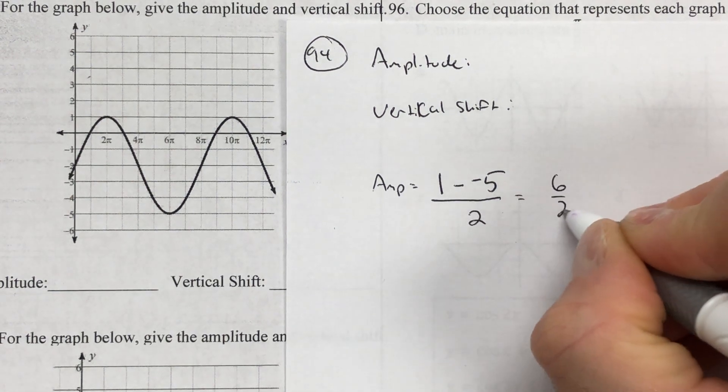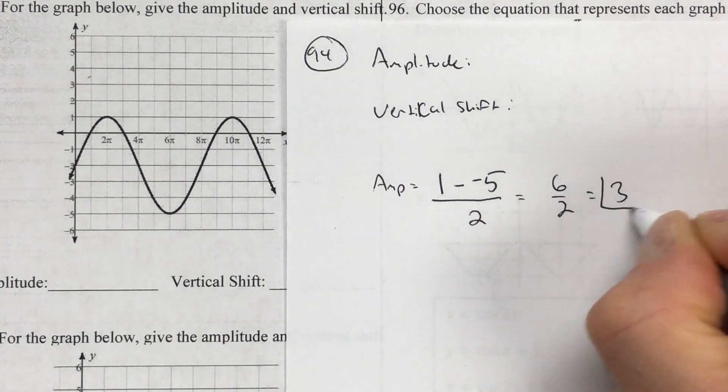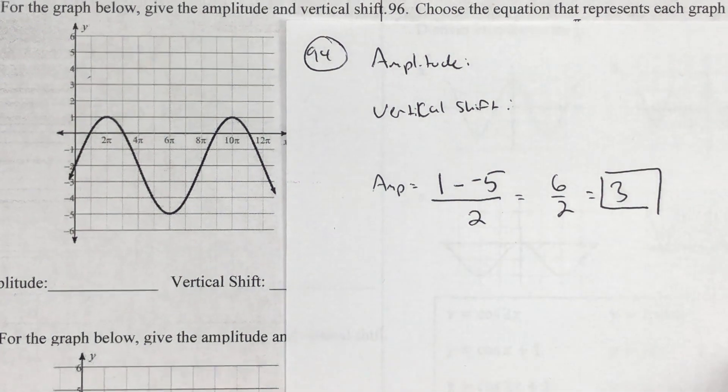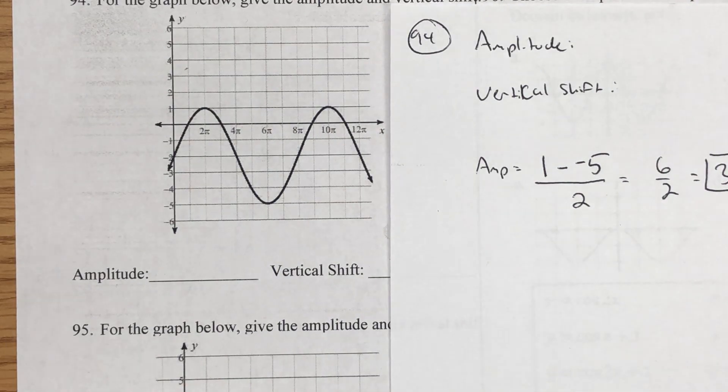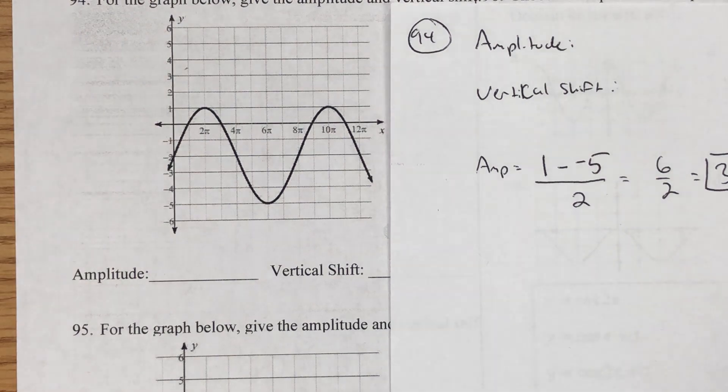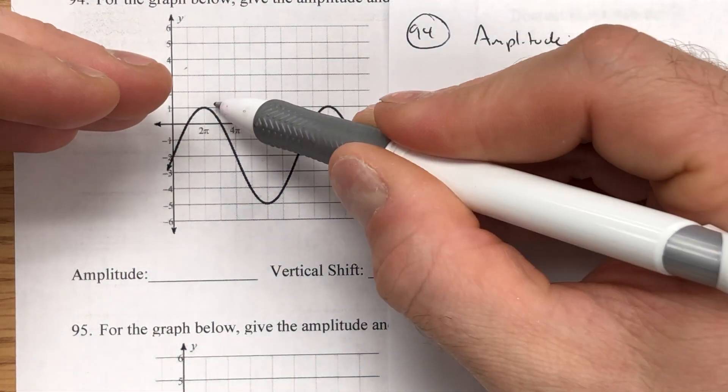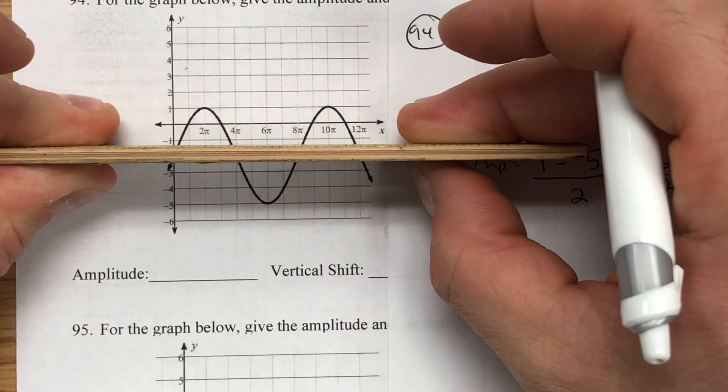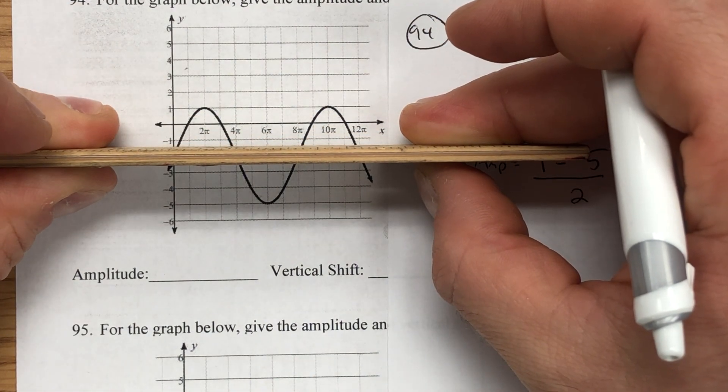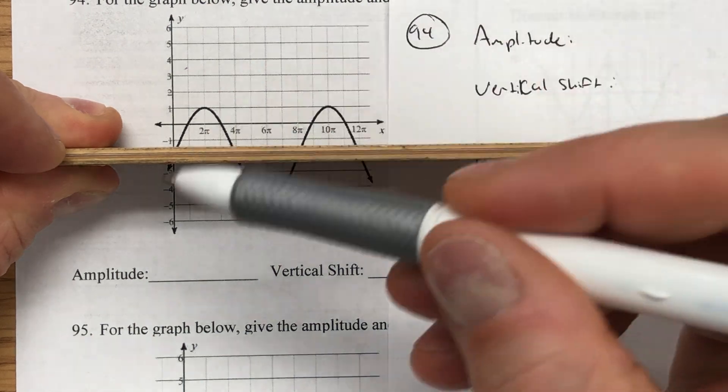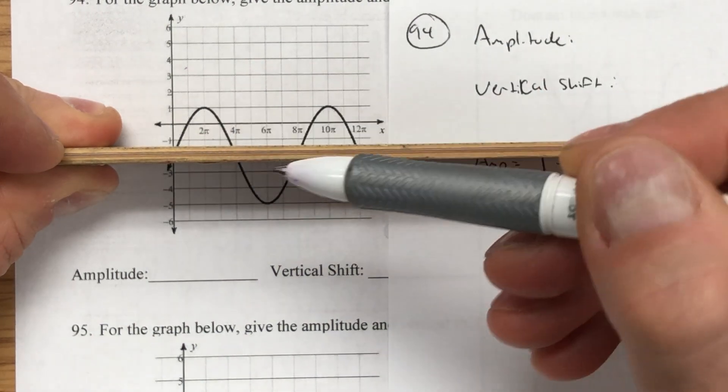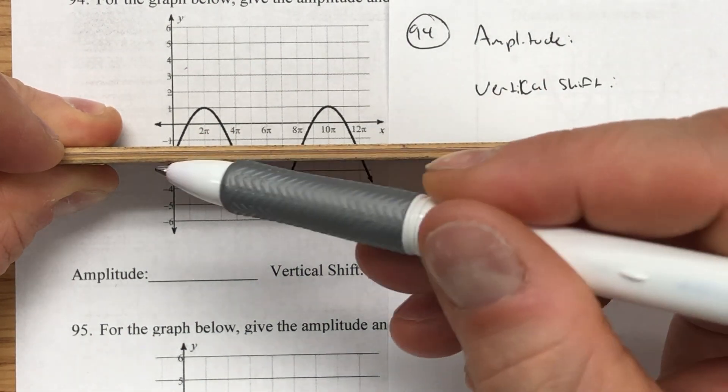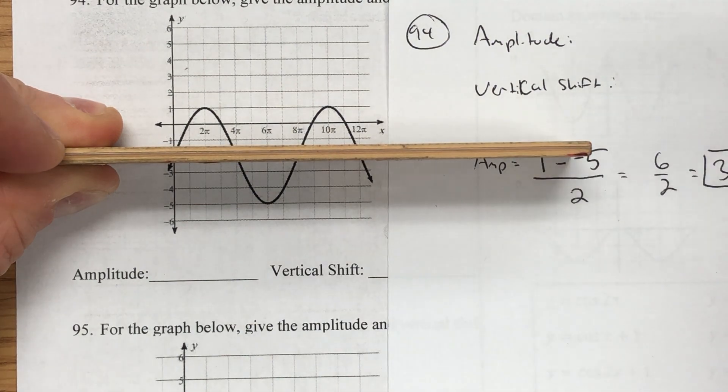So if I notice that the amplitude is 3, I'm going to count my way down and say, okay, 1, 2, 3, I should have a midline right there. In fact, if we look at the graph, I do see the fact that I can go 1, 2, 3 units up and I can go 1, 2, 3 units down. So that's where the graph is.